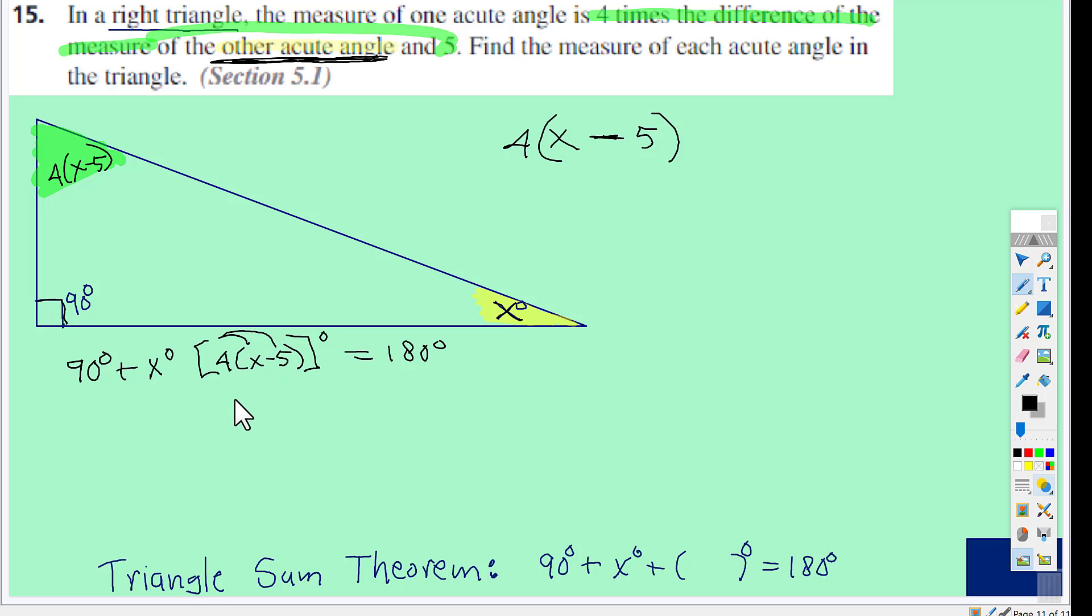I'm going to start by doing the distributive property here, so that would be 4x subtract 20 degrees. And then we have our x degrees and our 90 degrees.